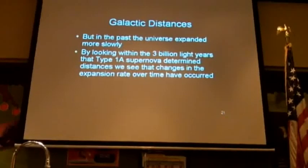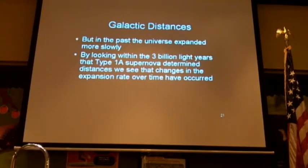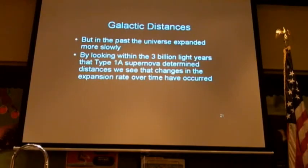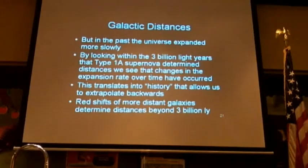Remember I said telescopes were time machines. If you're looking at Andromeda at 2.5 million light years away, you're actually looking at it as it was 2.5 million years ago. By looking within the 3 billion light years at Type 1A supernova distances, we can see that changes in the expansion rate over time have occurred. You measure here, then you measure here, you're getting closer and closer to yourself, and the rate changes. That tells us that over time, the expansion rate has accelerated.